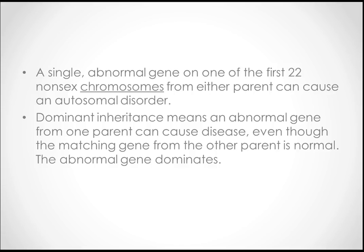Autosomal dominant is a single abnormal gene on one of the first 22 non-sex chromosomes from either parent that can cause an autosomal disorder. The dominant inheritance means an abnormal gene from one parent can cause disease even though the matching gene from the other parent is normal — the abnormal gene dominates. If you have two genes and one is dominant, it gives rise to the disease.